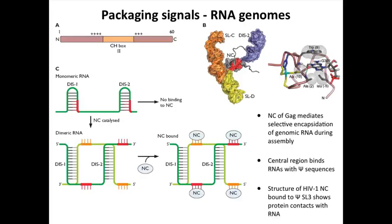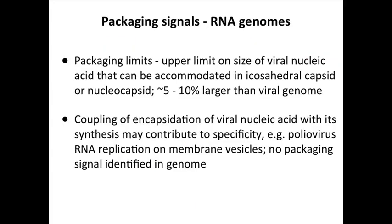When these particles are getting ready to bud, you have the viral proteins assembling at the membrane with the RNA bound to the Nc. Nc is part of the GAG precursor that gets assembled into budding particles, and then all of that is cleaved by the protease, causing the final maturation.